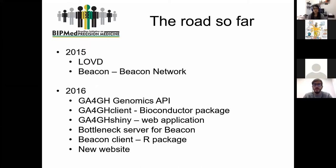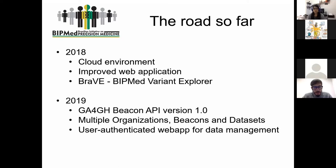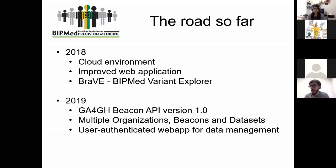In 2016, we had different clients from the Global Alliance for Genomics and Health — a client for Bioconductor and a web application. In 2018, we started moving all our software to a cloud environment, and we came up with BRAVE, the BIP-Med Variant Explorer. In 2019, we added multiple organizations supported by our software, multiple beacons and datasets, and implemented user authentication for data management.